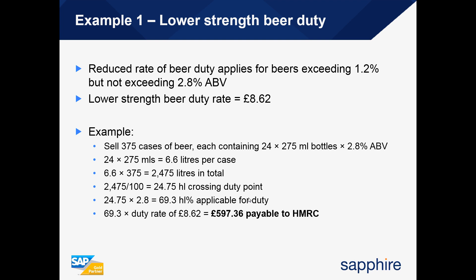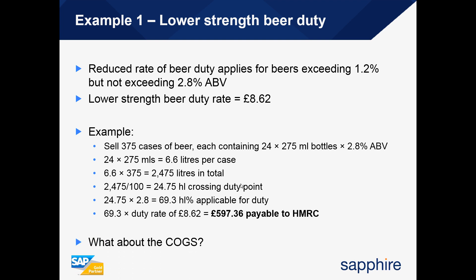The total duty payable to HMRC will be 69.3 multiplied by the duty rate of £8.62, giving a value of £597.36. As discussed, businesses often prefer to pass on this duty rate to their customer and include it in the cost of goods sold, so that profit figures also reflect the duty value.